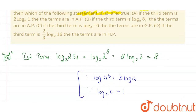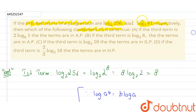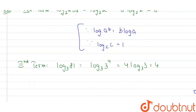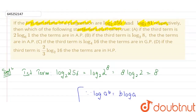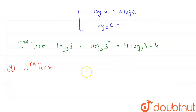Now the first statement says: if the third term is 2·log base 6 of 1, then the terms are in AP. Let's check option A. The third term is given as 2·log base 6 of 1. We know that log of 1 is 0.